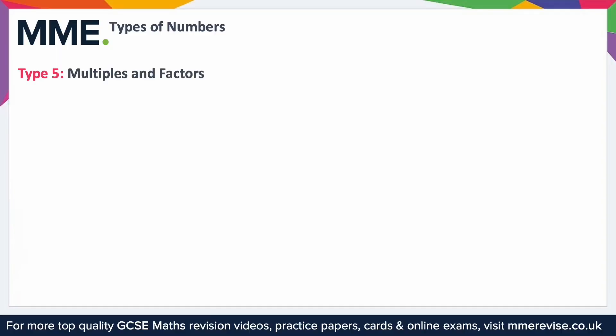Two more types of numbers that you need to know are multiples and factors. The first, multiples, is a number that appears in the times table for a number.